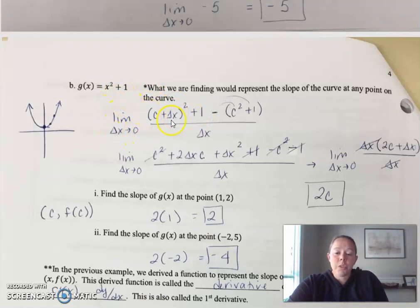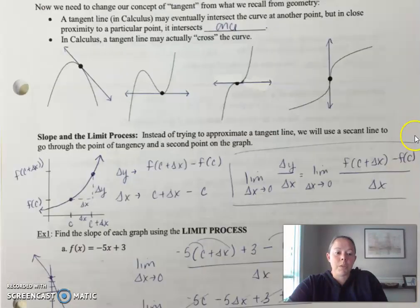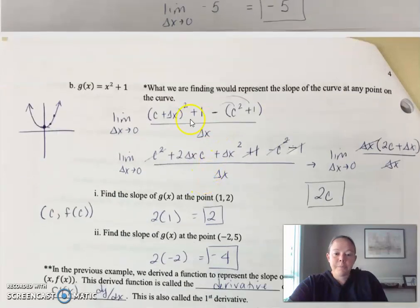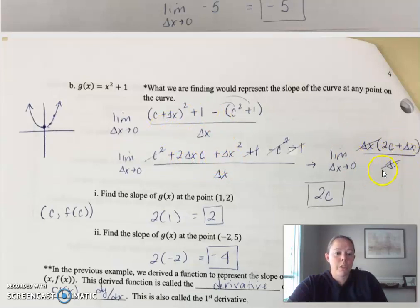Limit as Δx approaches 0. First, plug in (x + Δx) for x — so (x + Δx)² + 1 — then minus f(x), all over Δx. Square out that binomial: square the first, combine and double, square the last, distribute the negative, cancel what can cancel. Now you have two terms left that have Δx in them, so factor that Δx out. Then you're able to cancel that Δx, and finally plug 0 in for the remaining Δx.